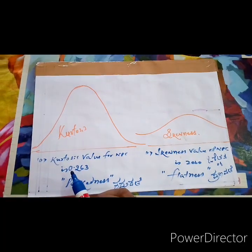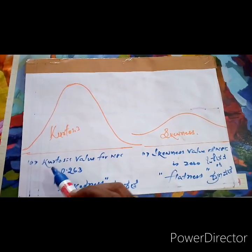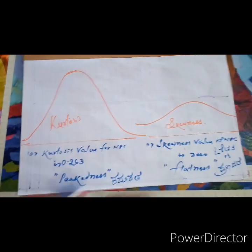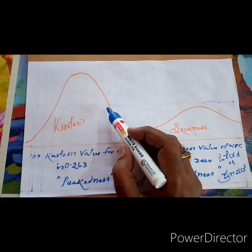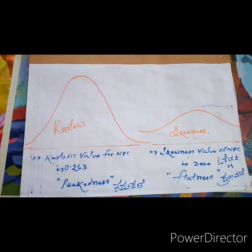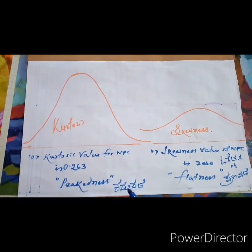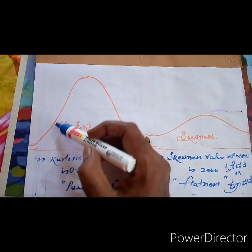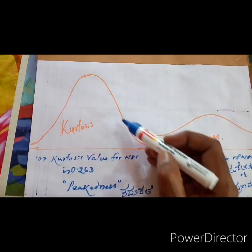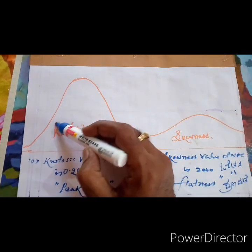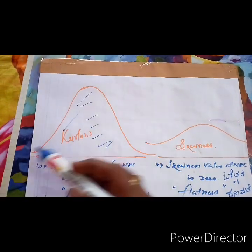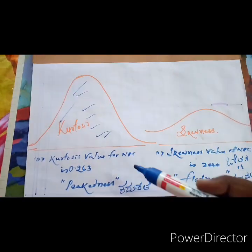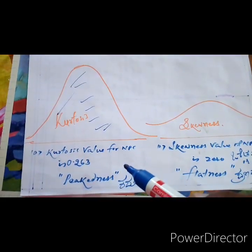Next point is, Kurtosis value of the NPC is 0.263. What is Kurtosis? Kurtosis is the peakedness, the peak is going high at the top and coming down. That is what we call the peakedness. High peak it has. Its value is 0.263.